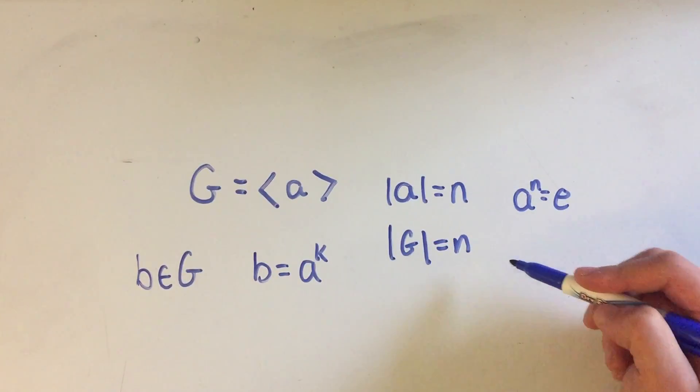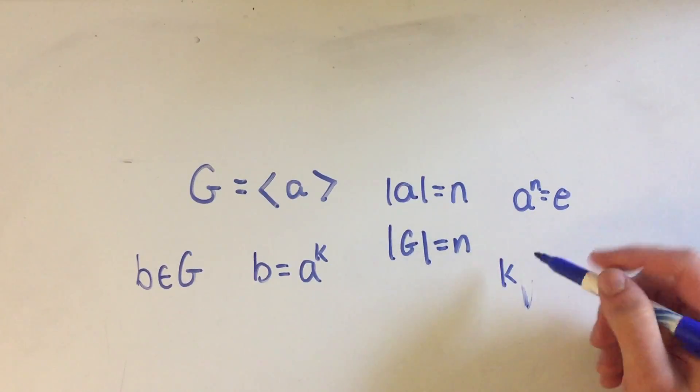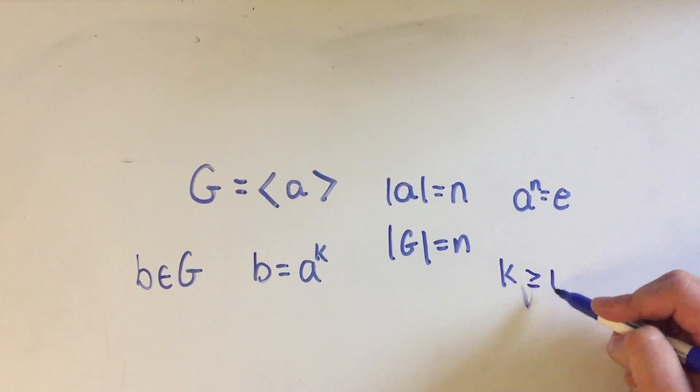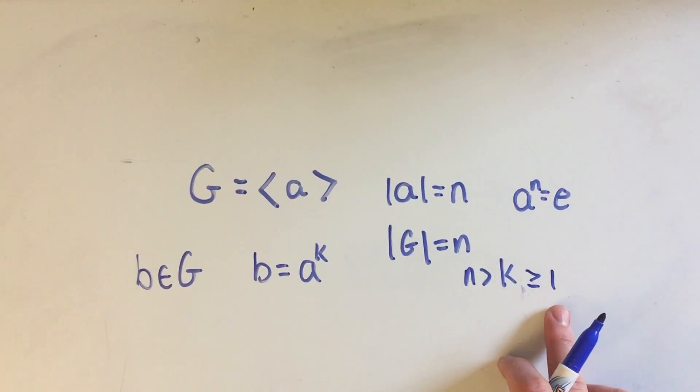Say A to the K for K, we'll just say K bigger than 1 but less than N. Because A to the first is A, and A to the N is the identity element.